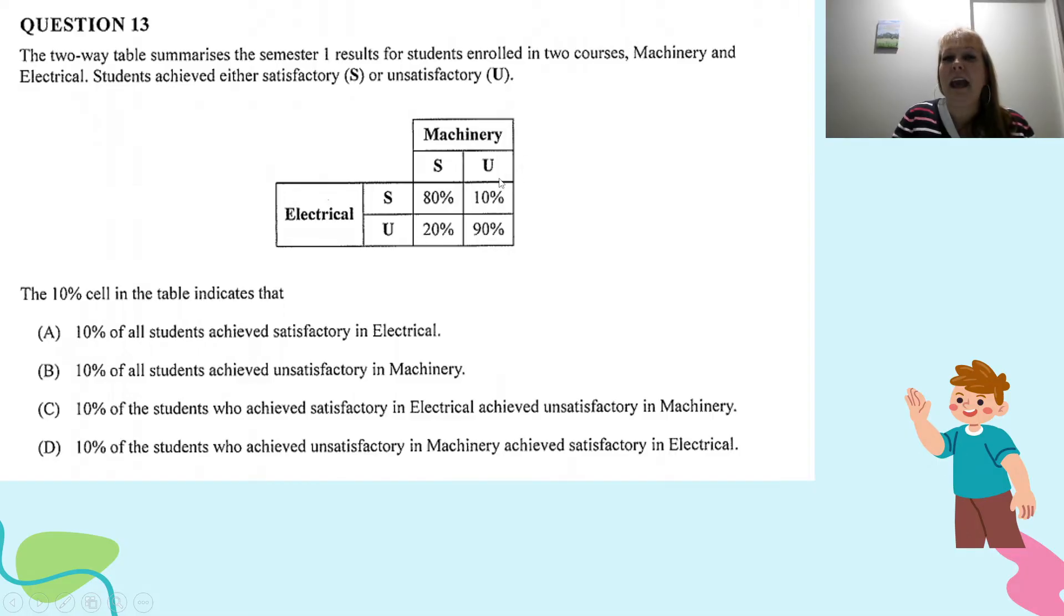Over to this column here, out of the ones in my class that failed Machinery, 10% of the ones that failed Machinery passed Electrical. And out of the kids in my class that failed Machinery, 90% of them failed both of the subjects. That's how I read this particular one.